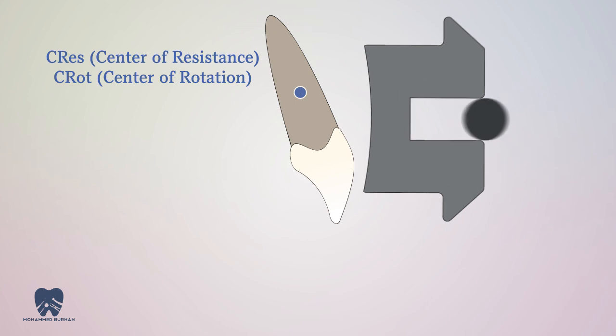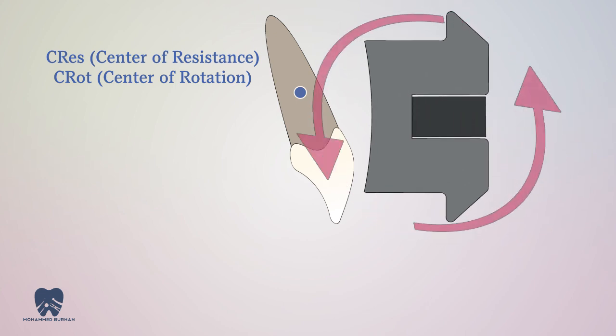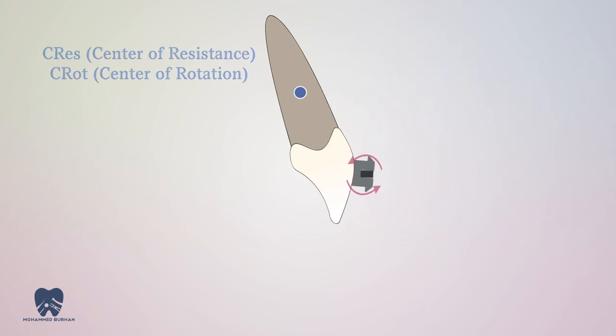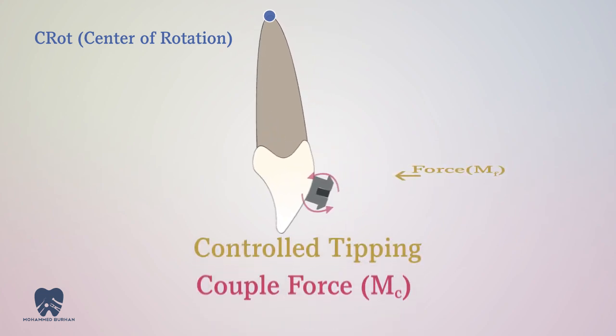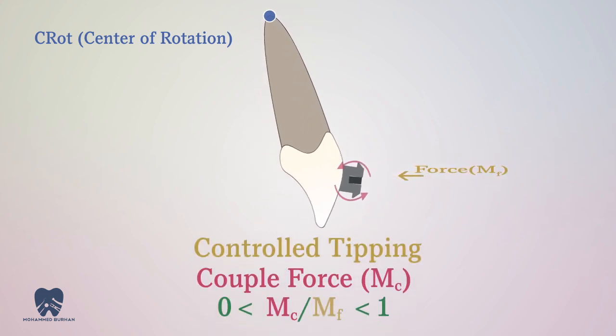Now let's replace this wire with a rectangular arch wire. The center of rotation is displaced apically. This is called controlled tipping. This is a desired movement unlike the first one.